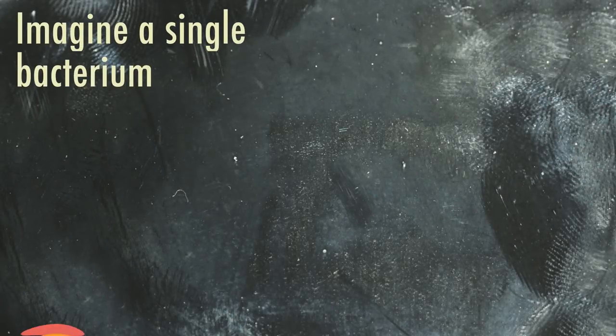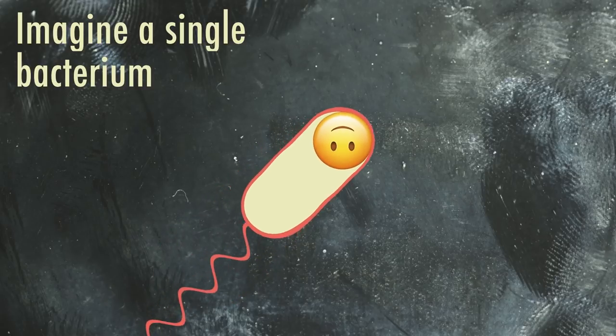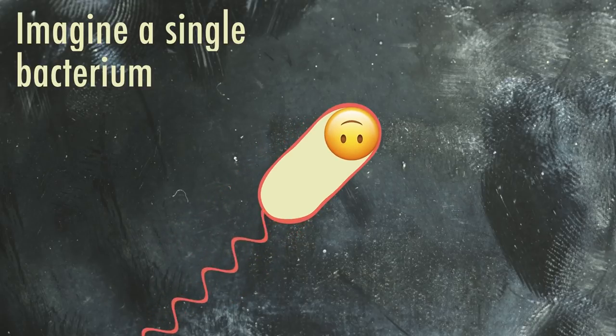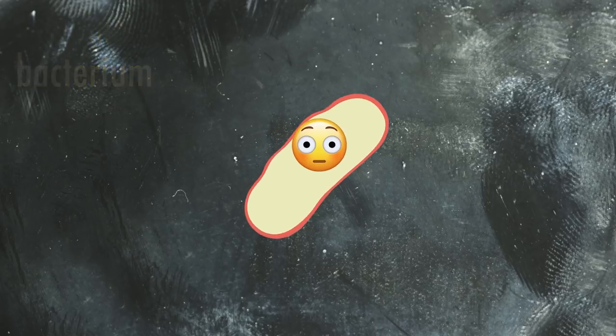Imagine a single bacterium, swimming along collecting nutrients by itself. Eventually, it will be time for it to reproduce, and it does so by cell division, splitting itself evenly to produce two genetically identical daughter cells.